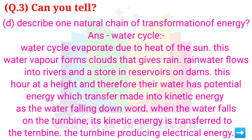D. Describe one natural chain of transformation of energy. Answer — Water cycle: Water evaporates due to heat of the sun. This water vapor forms clouds that give rain. Rainwater flows into rivers and is stored in reservoirs on dams. These are at a height and therefore their water has potential energy, which is transferred into kinetic energy as the water falls downward.